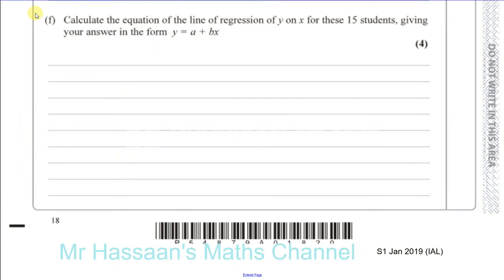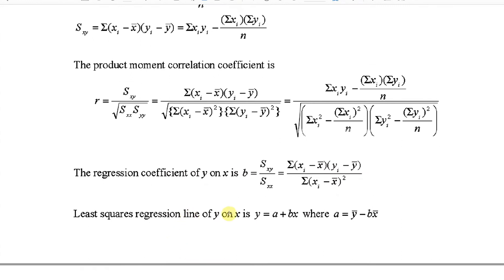Okay, question number six, part F of January 2019 S1. In this question, we're asked to calculate the equation of the line of regression of y on x for these 15 students, giving your answer in the form y equals a plus bx. So let's go to the formula sheet, which helps a lot in these type of questions.